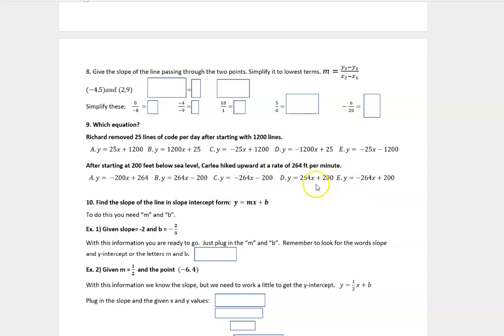The other ones either start at positive 200, which doesn't make sense when you're below sea level, or 264, which is not where she started. So we have two different choices here that would make sense. And then she hiked upward at a rate of 264. So the reason this one doesn't make sense is it's negative. That looks like she's going downward since she started at negative 200 and hiked upward at a rate of 264 feet per minute. B is the choice of the equation that I would choose to match this statement.